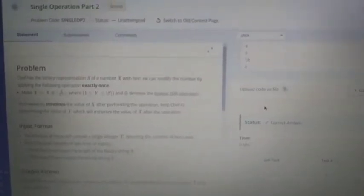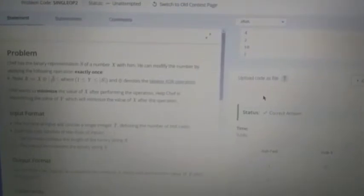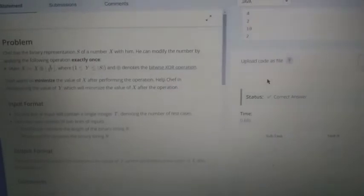In this video I will be discussing the problem Single Operation Part 2 from the Code Chef long challenge of the October long challenge. The question states that chef has a binary representation s of a number x with him.